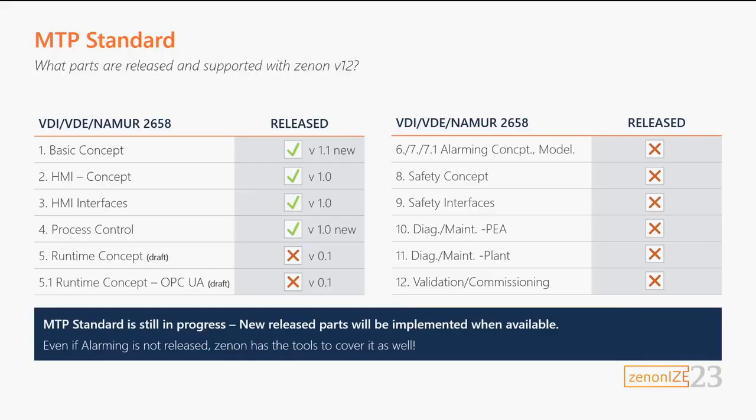There are other parts of the standard not yet ready — still in progress. The standards have been worked on since around 2015, and we at Copadatta had our first touch points with MTP in 2015–2016. In the next version of Xenon — version 12 — we decided to support parts 1 through 5.1. Parts 5 and 5.1 are still in draft but expected to be released soon according to the working groups.